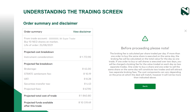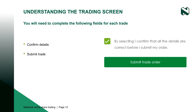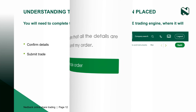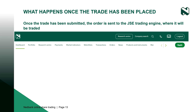Once you have captured the details of your order, the order summary will be populated on the right-hand side of the screen. The order summary is a written description of the order you're trying to place, and you should always read it before submitting your order. It carries the following information: the projected cost breakdown shows the number of shares multiplied by the market or limit price stipulated; the projected fee breakdown shows the various fees that will be charged on the trade; and the projected total cost of trade is calculated by adding the above costs.